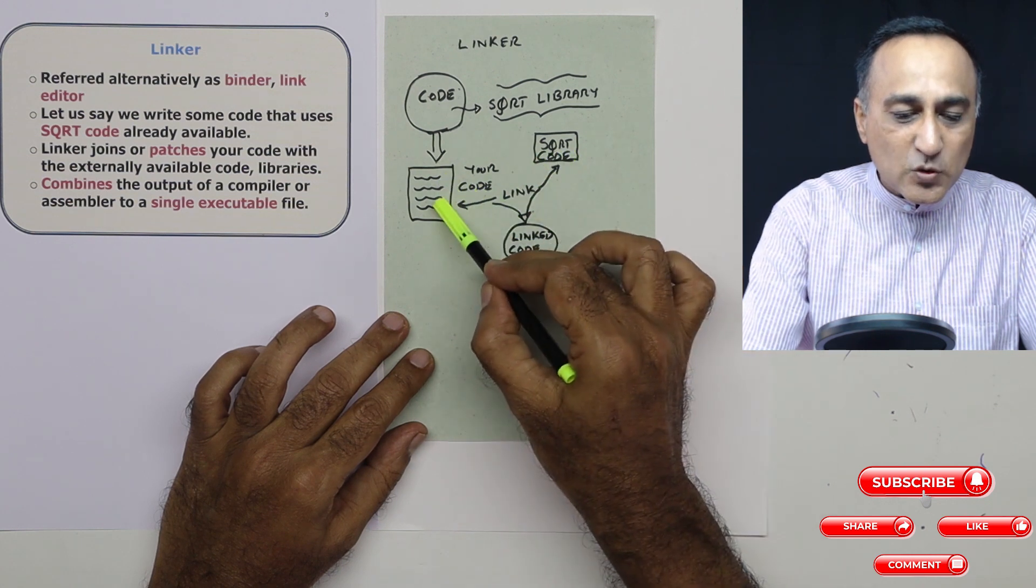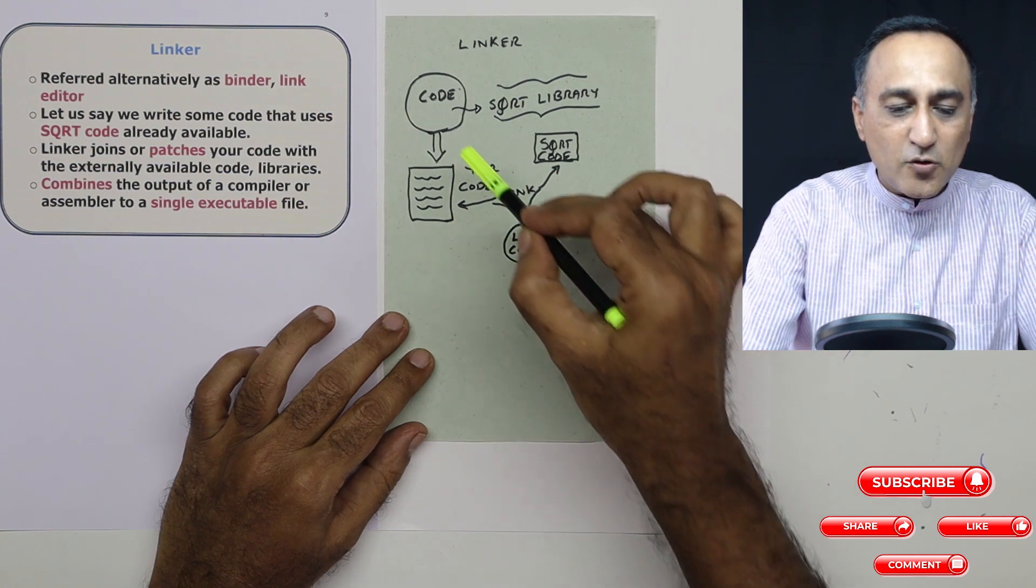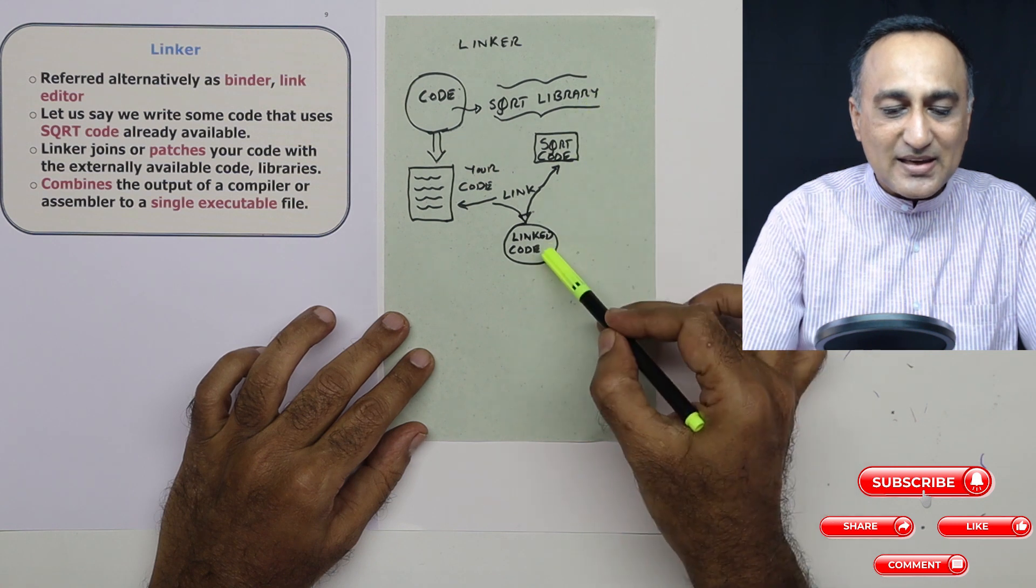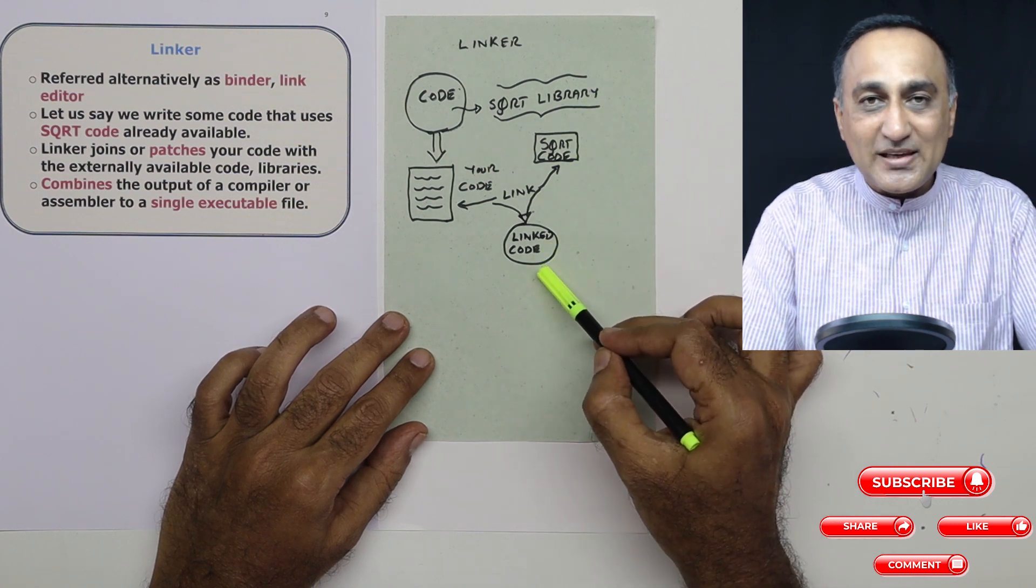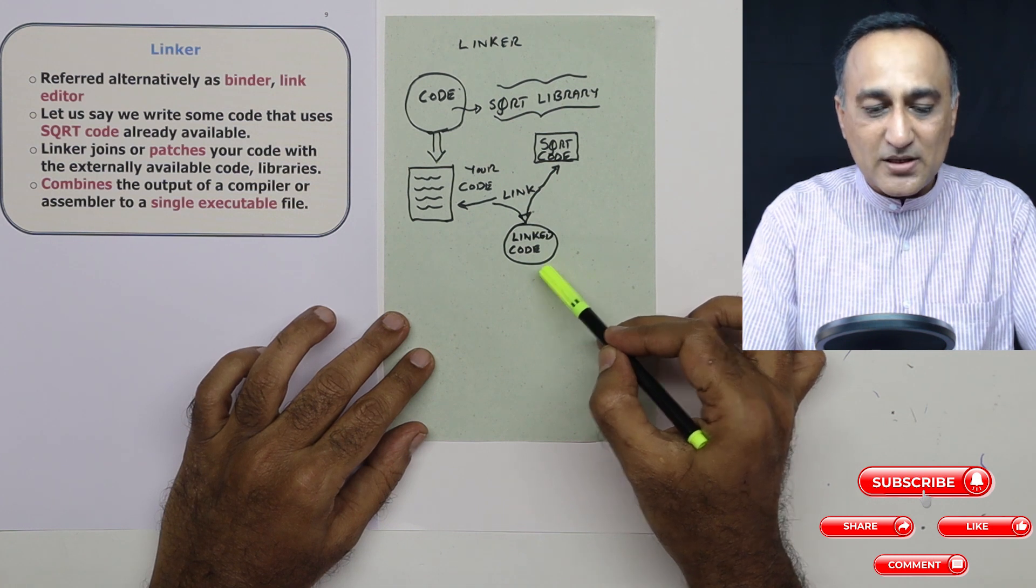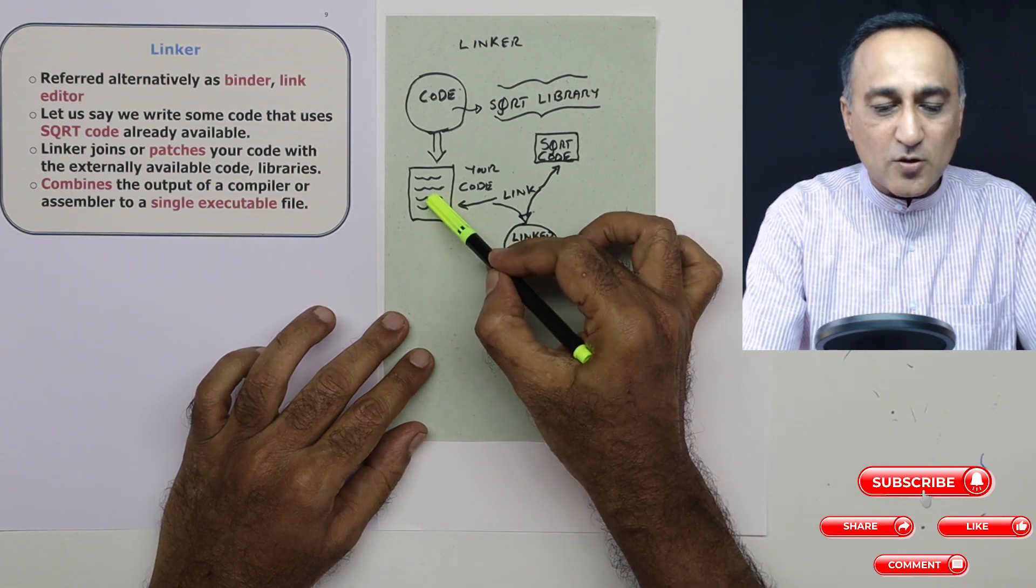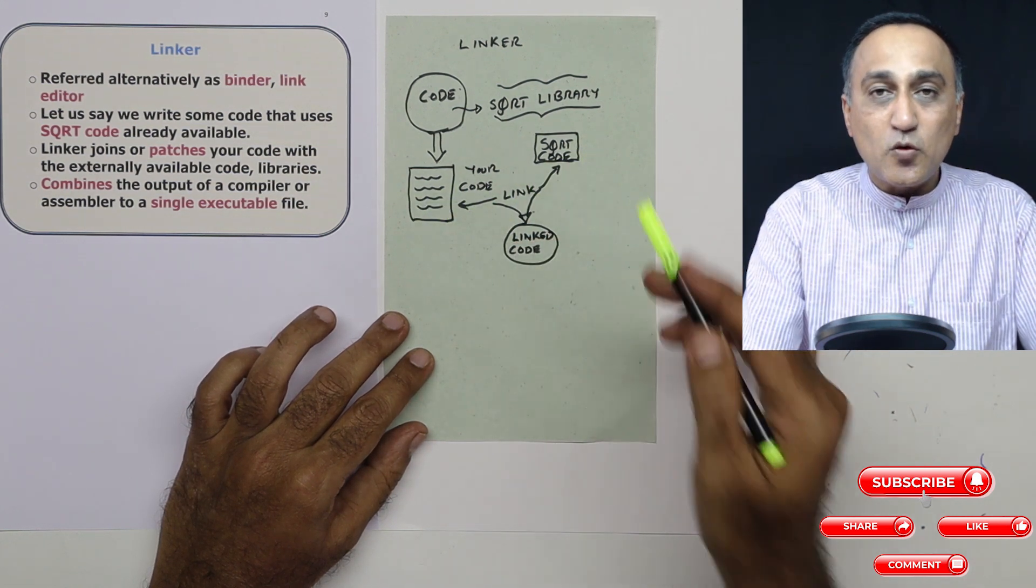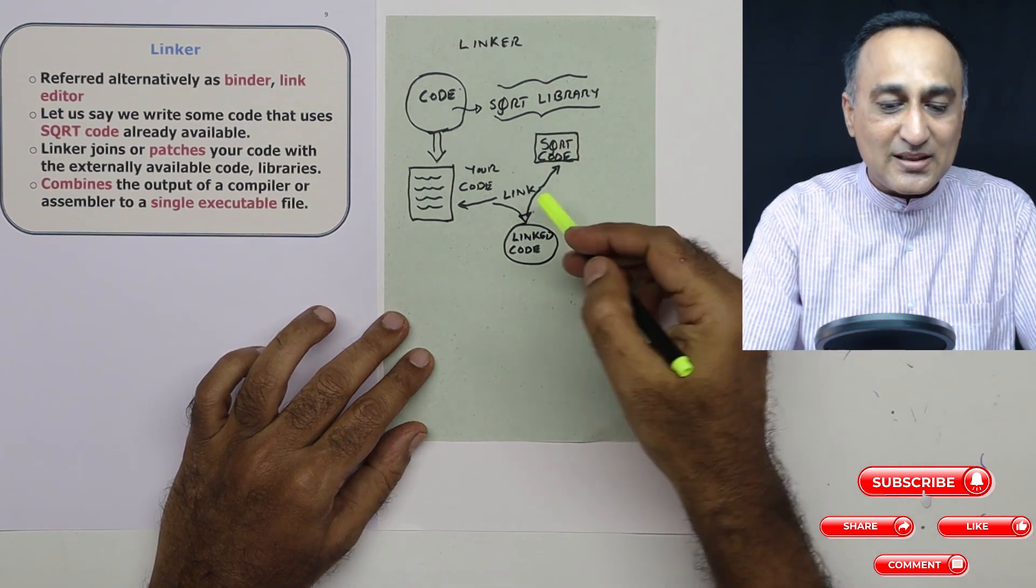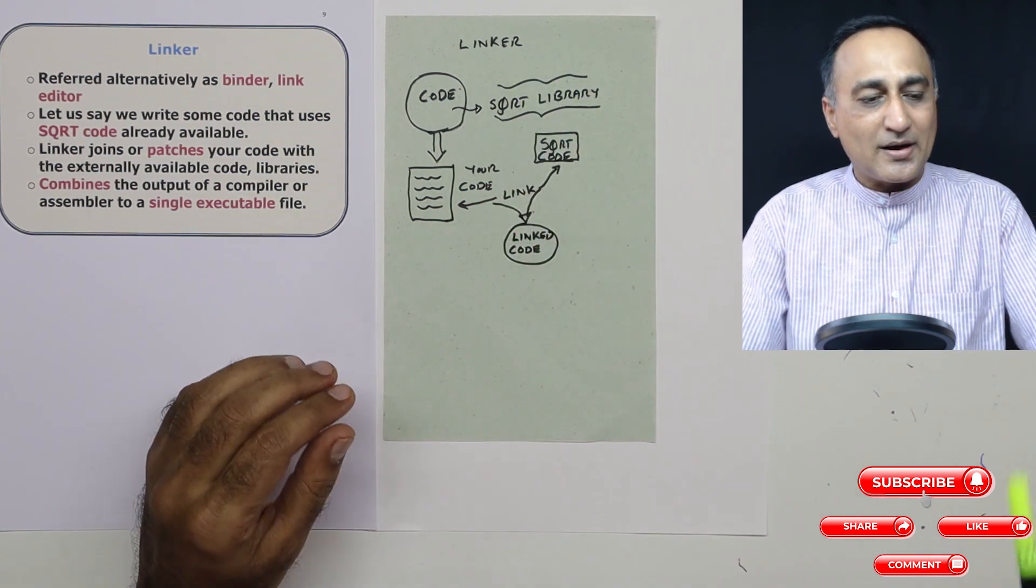Now once you link the square root code with your code, then the complete linked code which includes your original code as well as the square root code from the library is the final executable called the dot exe on Windows or a dot out on Linux and Unix. So now you're able to run this particular code on the machine. You will not be able to run just your own code because the square root code which was not written by you has already been written by some experts, is available in a library. The linker takes it from the library, patches up or joins it with your code and you're able to run it.